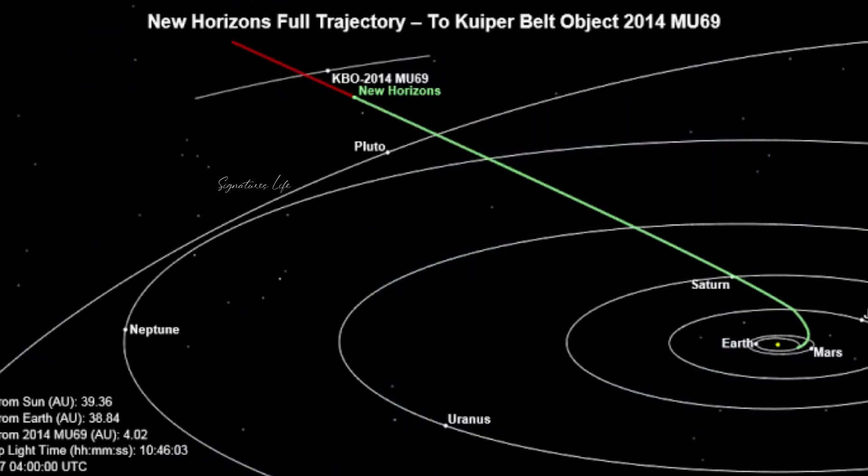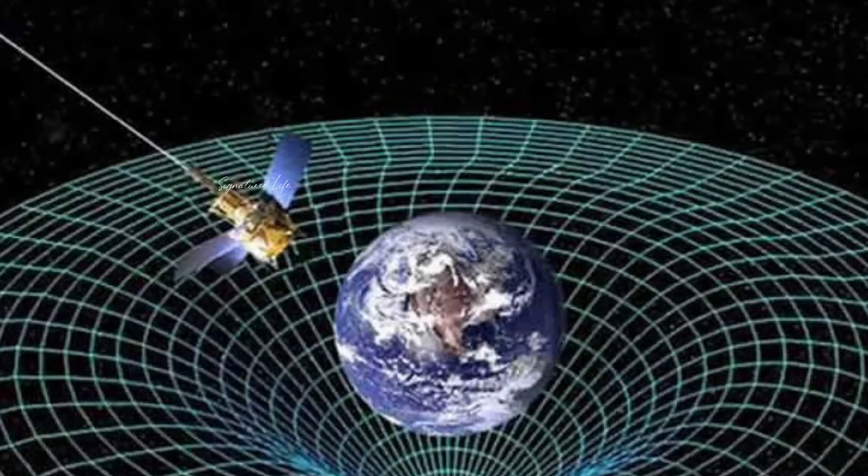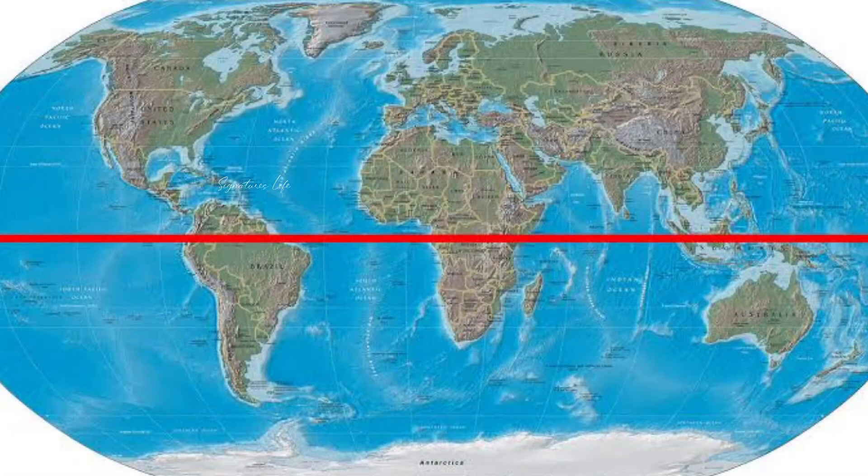But conducting this experiment on a positively curved space that represents a view of a closed universe would create a different outcome. This time, start at Earth's equator.